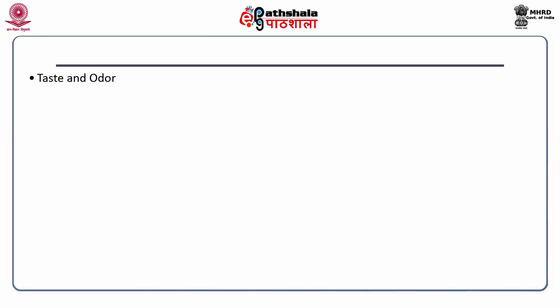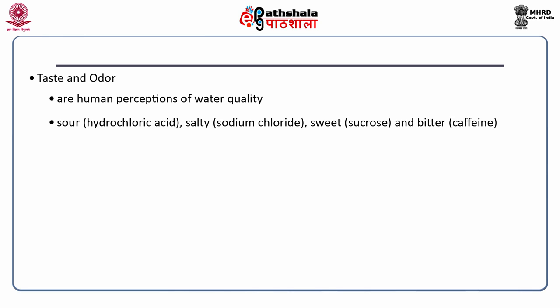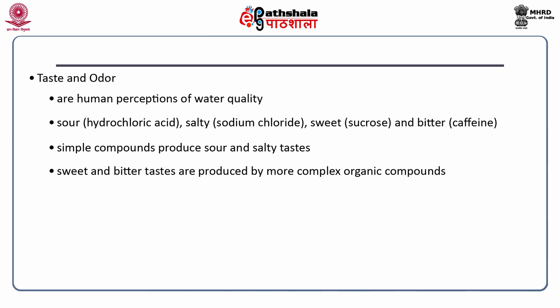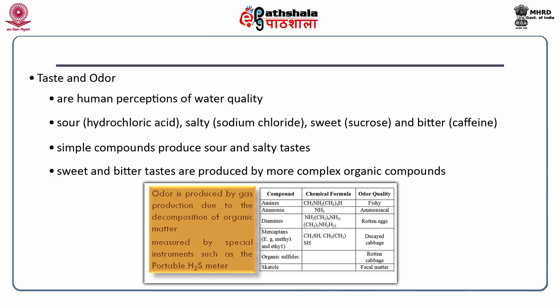Taste and odor are basically the human perceptions of water quality. Human perception of taste includes sour like hydrochloric acid, salty like sodium chloride, sweet like sucrose and bitter like caffeine. Simple compounds relatively produce sour and salty taste; however, sweet and bitter tastes are produced by more complex organic compounds. Odor in water is produced by gas production due to the decomposition of organic matter or by substances added to the wastewater. It is measured by special instruments such as a portable hydrogen sulfide meter. Some examples of odor-producing substances are amines, ammonia, diamines, mercaptans, organic sulfides and skatones.